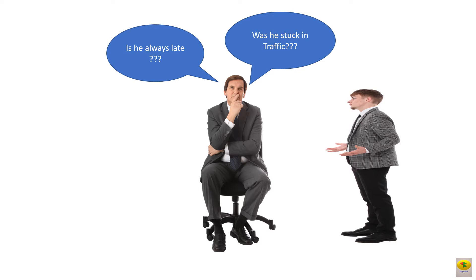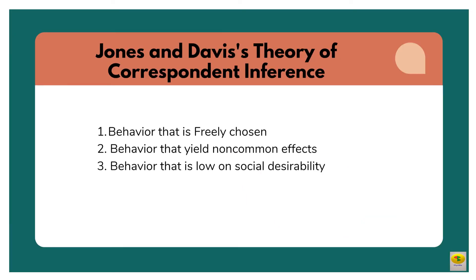So the first theory we will be studying is Jones and Davis's theory of correspondent inference. According to this theory, we tend to focus on the type of actions that are most likely to prove informative. This theory focuses on three behaviors. The first one is behavior that is freely chosen, which says we are likely to consider behavior as corresponding to a person's trait when the behavior seems to be freely chosen.